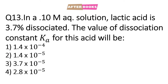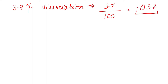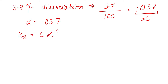Question number 13: We are given the molarity of an aqueous solution and told how many percent it dissociates. We need to find the dissociation constant, that is Ka. Now 3.7% dissociation means alpha = 3.7/100 = 0.037. So the value of alpha is 0.037. Now we need to find the dissociation constant, which equals c·α².